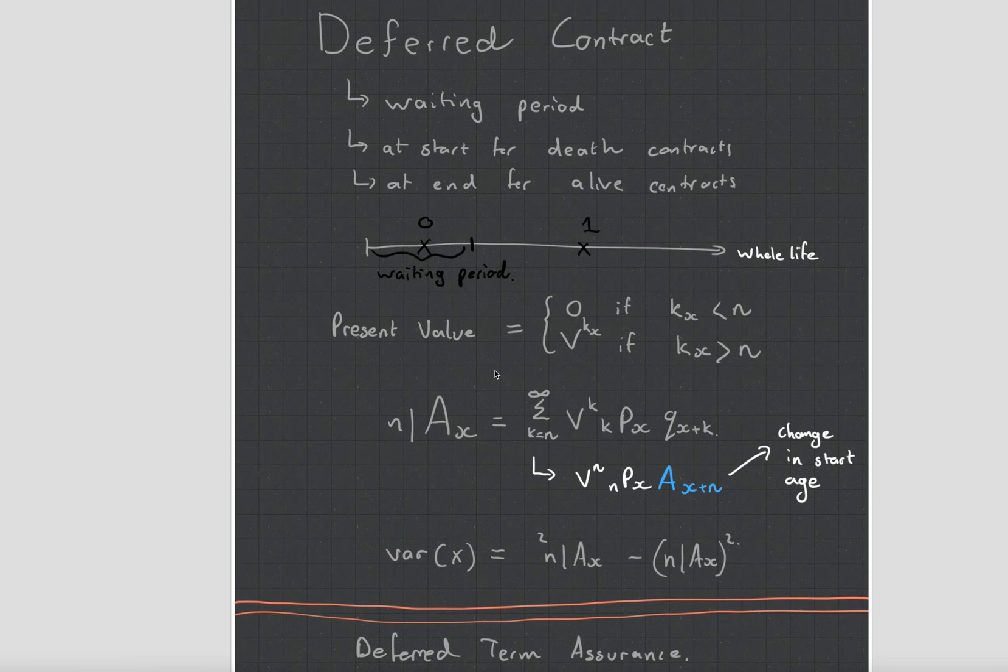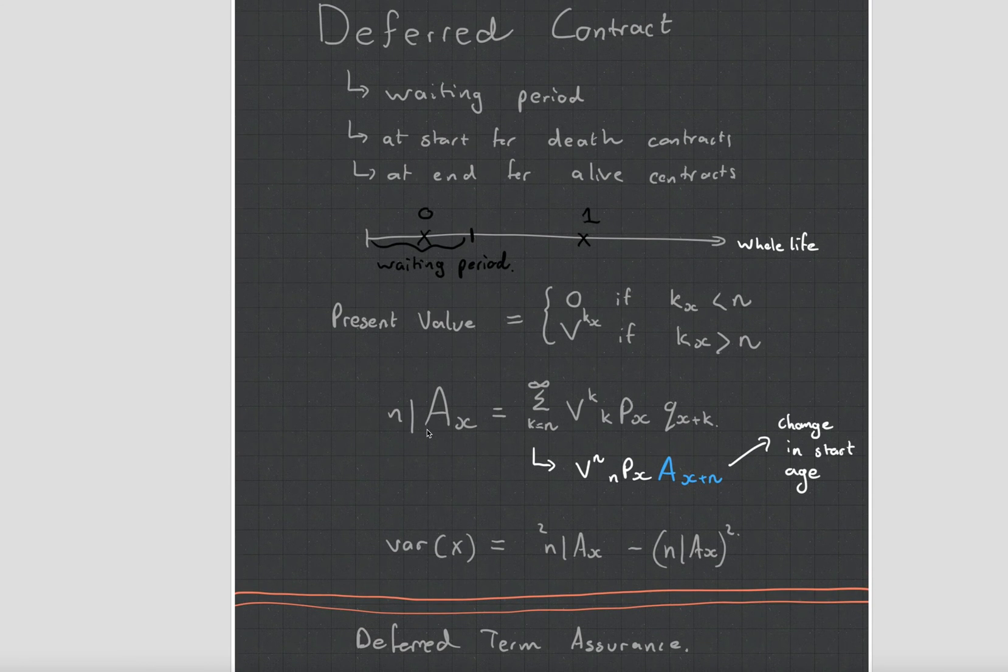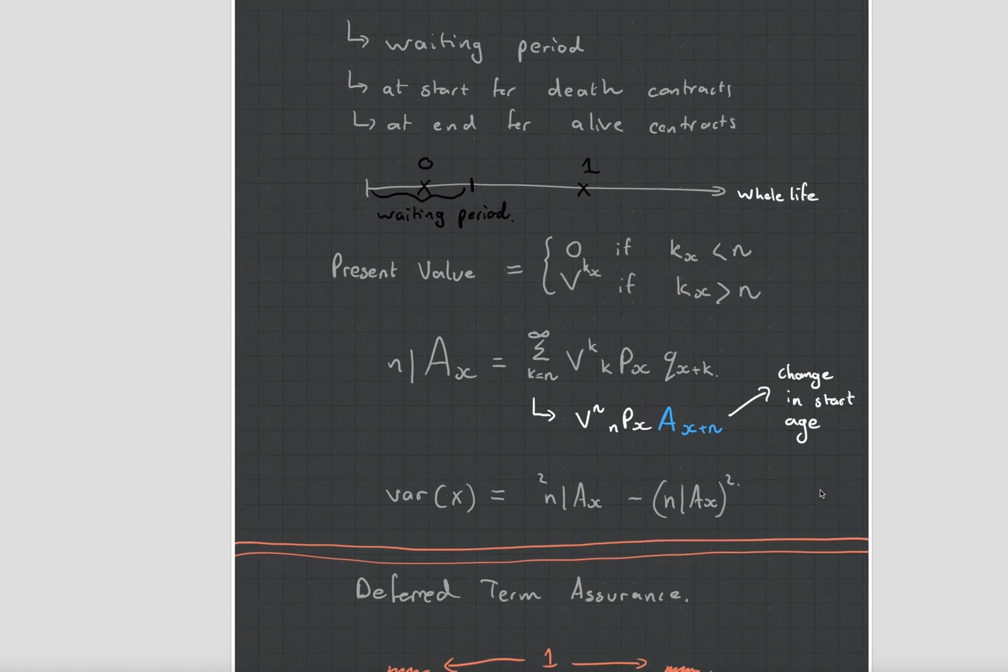So yeah anyway back to the chapter at hand the symbol is n deferred AX and you can see it's exactly the same as the whole life except we're adding or our k is starting at n which means you can see that's almost like the pure endowment that's V^n nPX and then notice that the age changes. I mean a lot of people forget to change the age when they do the calculation and they get it wrong.